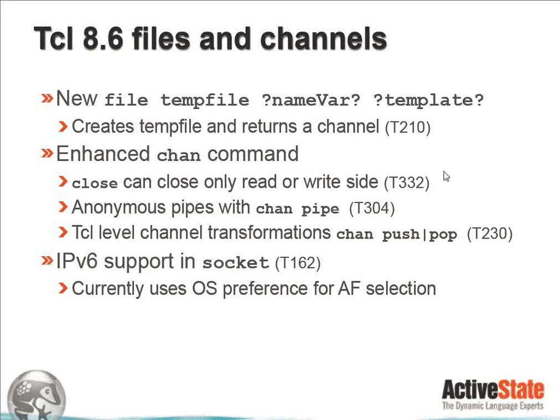The first enhancement is that close can close only the read or write side. This is very handy when dealing with sockets — you've pumped everything down and you're done writing, but in case of two-way communication, you leave the read side open. Anonymous pipes have also been exposed; they were available in C and are now available at the Tcl level with the chan pipe command. Tcl-level channel transformations are now possible with chan push and pop, from what was previously the TclIO generic transform package. In addition, IPv6 is now supported in the socket command, using the operating system preference for address family selection.